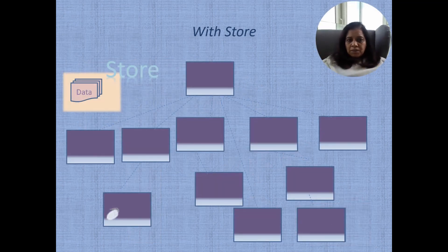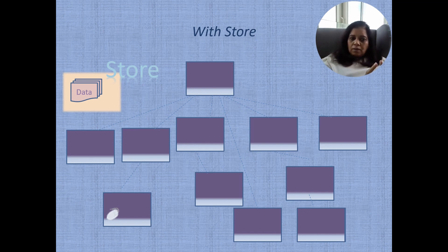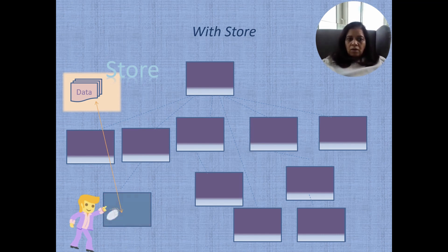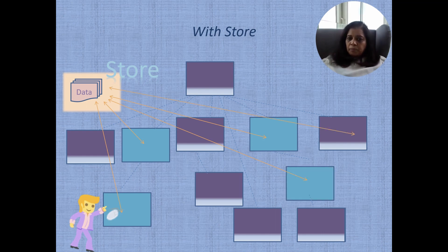Let's consider the same example again, now with the store. The store will represent the application-wide state — we can think of the store as the central place where the whole application data resides. If a user clicks on the button and selects a particular theme, the selected theme will get updated in the store. Upon change in the selected theme, the interested components will get the notification reactively from the store. This is a cleaner way of managing data, and the flow of data is simplified. For complex, bigger-sized applications, the store helps us simplify the flow and management of data.